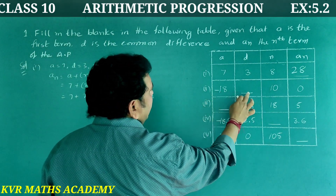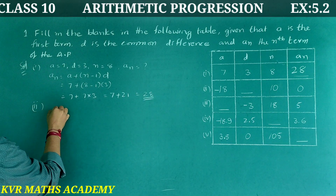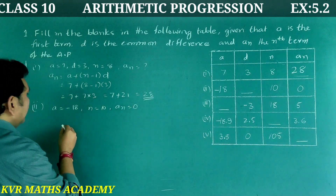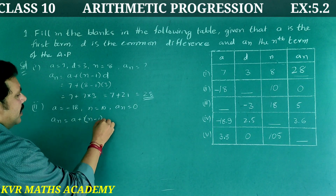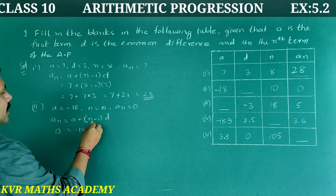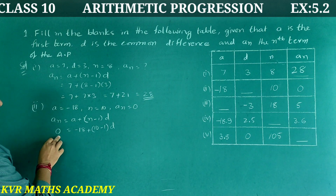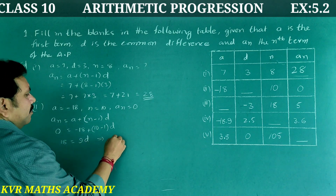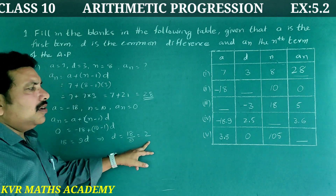Second one: A = −18, N = 10, A-N = 0, find D. Using A-N = A + (N − 1) × D: 0 = −18 + (10 − 1) × D, so 18 = 9D, therefore D = 18 ÷ 9 = 2.